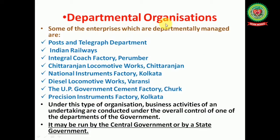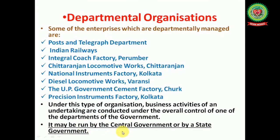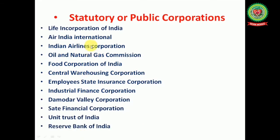Next is departmental organizations. Some enterprises which are departmentally managed include Post and Telegraph, Indian Railways, Integral Coach Factory, National Instruments Factory, and Precision Instruments Factory. Under this type of organization, business activities are conducted under the overall control of one of the departments of the government. It may be run by the central government or by the state government.